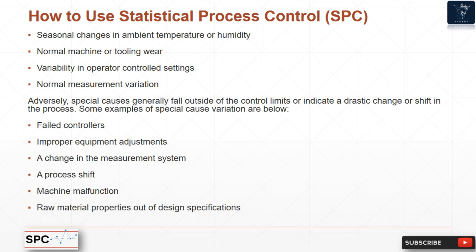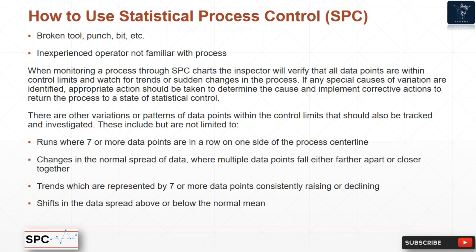Special causes generally fall outside the control limits or indicate a drastic change or shift in the process. Examples of special cause variation include: failed controllers, improper equipment adjustments, a change in the measurement system, a process shift, machine malfunction, raw material properties out of design specifications, a broken tool (punch, bit, etc.), or an inexperienced operator not familiar with the process.